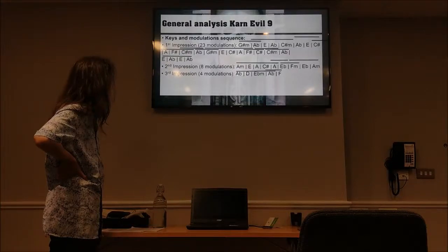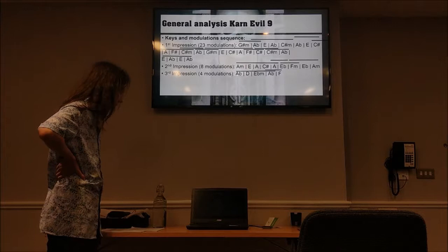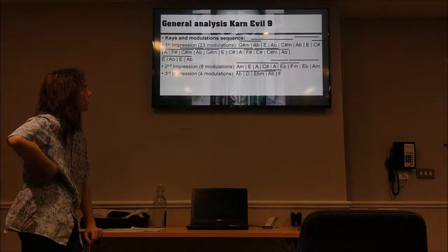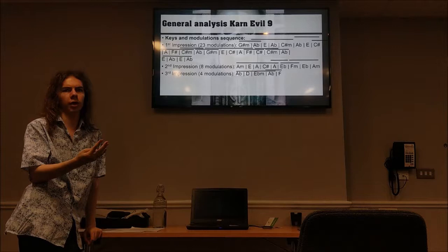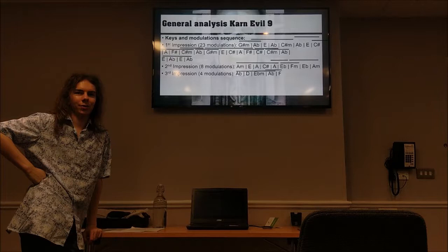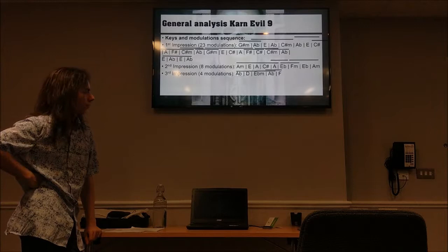Now we move from C sharp minor to A flat. There are two ways to interpret this. The initial way, in order to make sense, is to move from four crosses to four moles — that's the Dutch terminology for sharps and flats. I'll call them crosses and moles; you know what I'm talking about anyway.